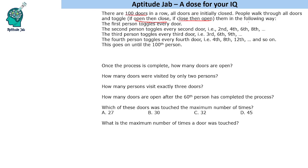The first person toggles every door. The second person toggles every second door: 2, 4, 6, 8. The third person toggles every third door: 3, 6, 9. The fourth person toggles every fourth door: 4, 8, 12, 16, and so on. The fifth person will toggle 5, 10, 15, 20. The sixth person will do 6, 12, 18, and so on.